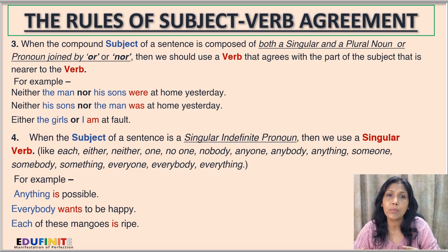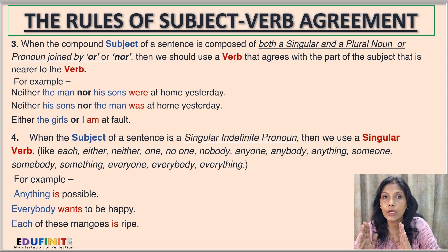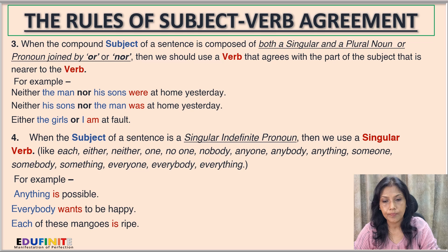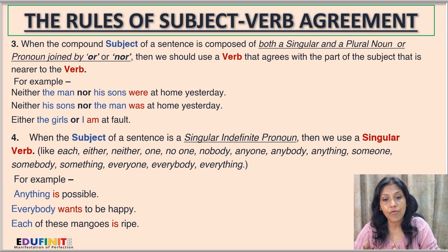Continuing Rule 3: the meaning of both sentences is the same, but the verb changes based on which subject noun is nearest. Also: 'Either the girl or I am at fault' — 'I' is next to the verb, so we use 'am' instead of 'are'.